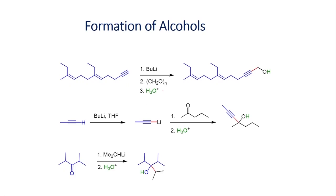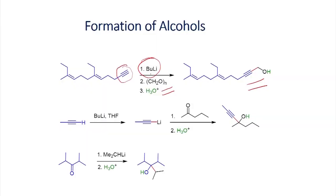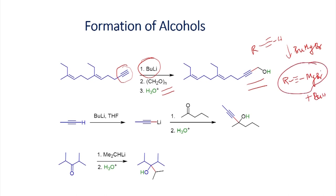Now let us look at other reactions. The next example involves the reaction of an alkyne with paraformaldehyde in the presence of n-BuLi to give a primary alcohol. If you remember the Grignard reaction, we saw that a terminal alkyne can be reacted with an alkyl magnesium bromide. Similarly here, n-BuLi acts as a base to deprotonate the acidic proton of the terminal alkyne, forming the alkyne lithium reagent, which undergoes 1,2-addition reaction with paraformaldehyde.